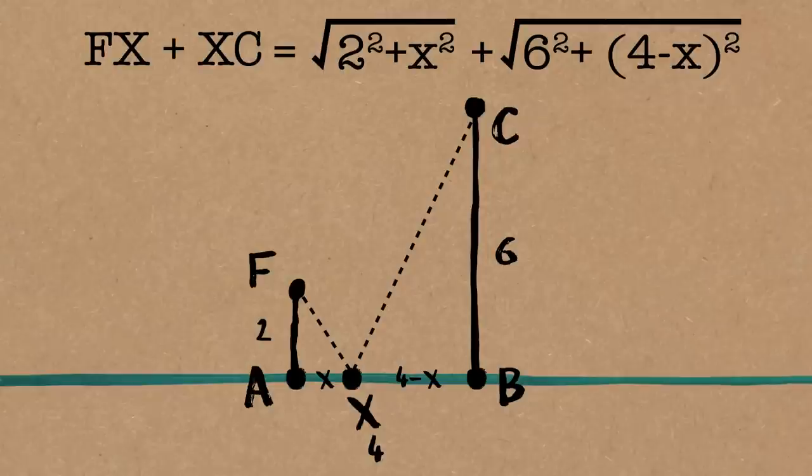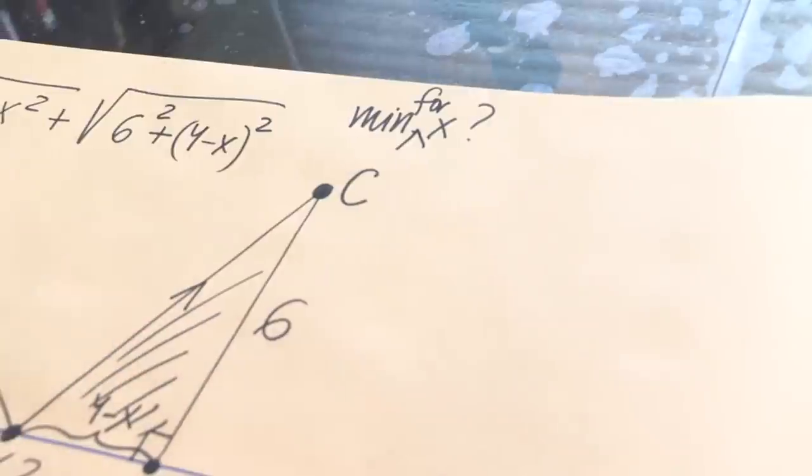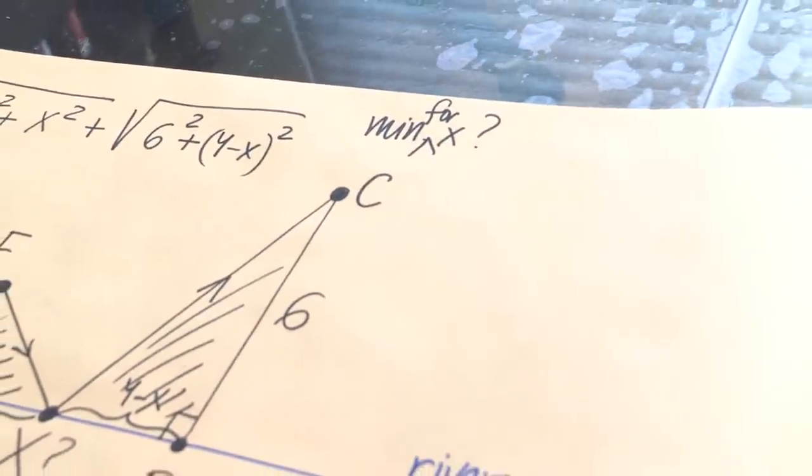So we have these two right triangles. Everyone is happy. The first hypotenuse will be square root of 2 squared plus x squared plus this hypotenuse Xc will be 6 squared plus 4 minus x squared. And what do we want? We want to minimize this. So minimum for which x? So which x is going to make this sum minimum? Before I start, I'm going to make some obvious observations which actually would need proof. But I want to simplify this already horrendous calculus solution.